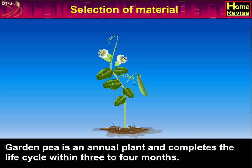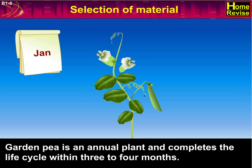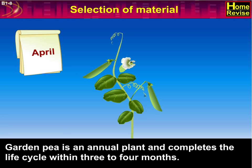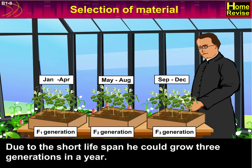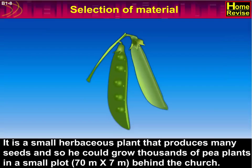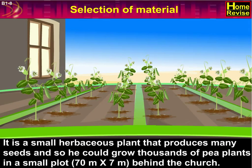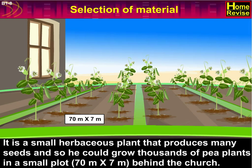Garden Pea is an annual plant and completes its life cycle within 3 to 4 months. Due to the short lifespan, he could grow 3 generations in a year, which saves time during experimentation. It is a small herbaceous plant that produces many seeds, so he could grow thousands of pea plants in a small plot — 70 meters by 7 meters — behind the church.